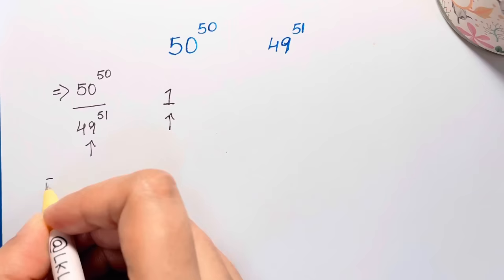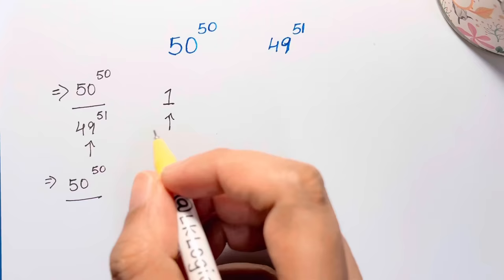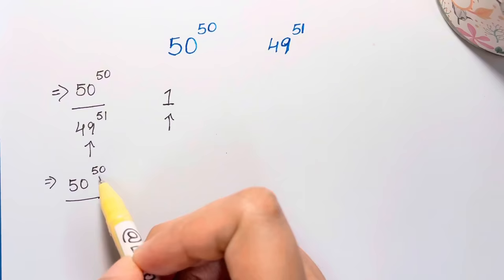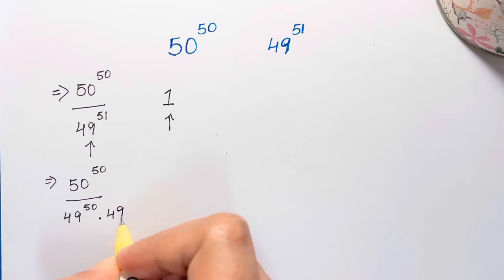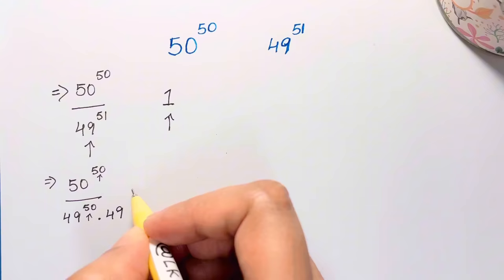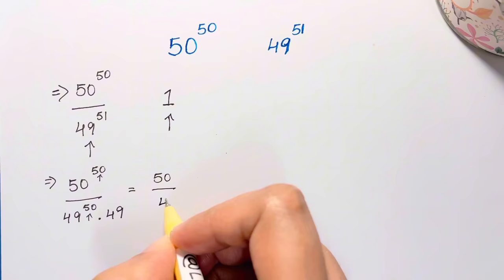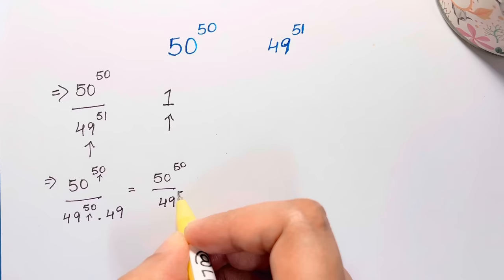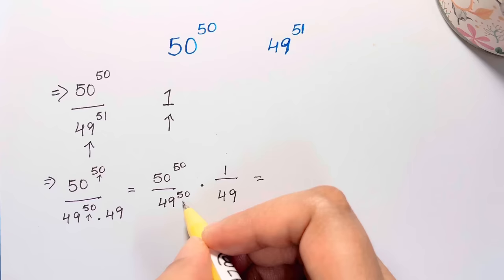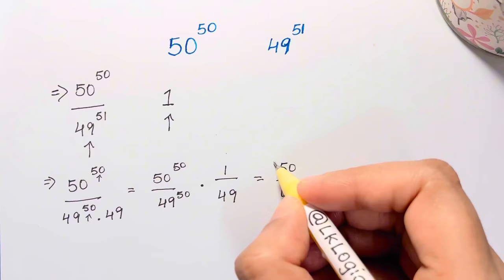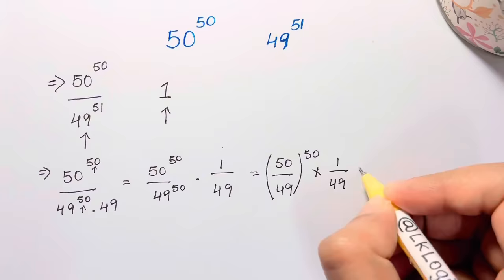We have 50 to the power of 50 over 49 to the power of 51. Now 49 to the 51 can be written as 49 to the power of 50 times 49. You can see the same exponent 50 here and here, so you can write it as 50 to the 50 over 49 to the 50, times 1 over 49.